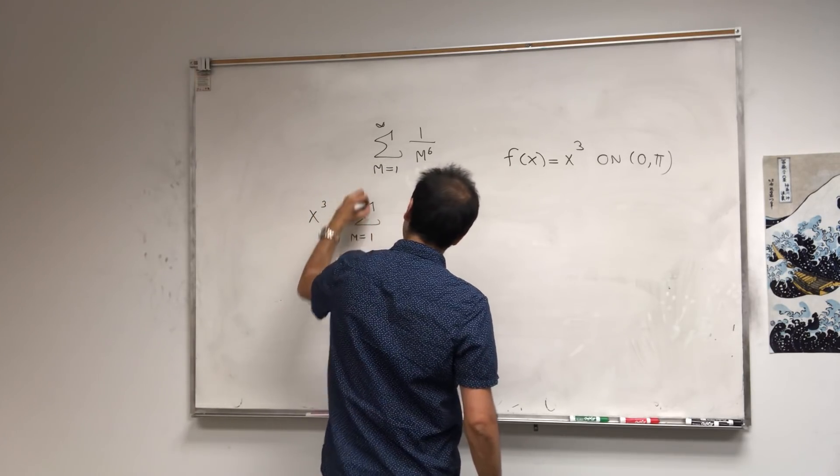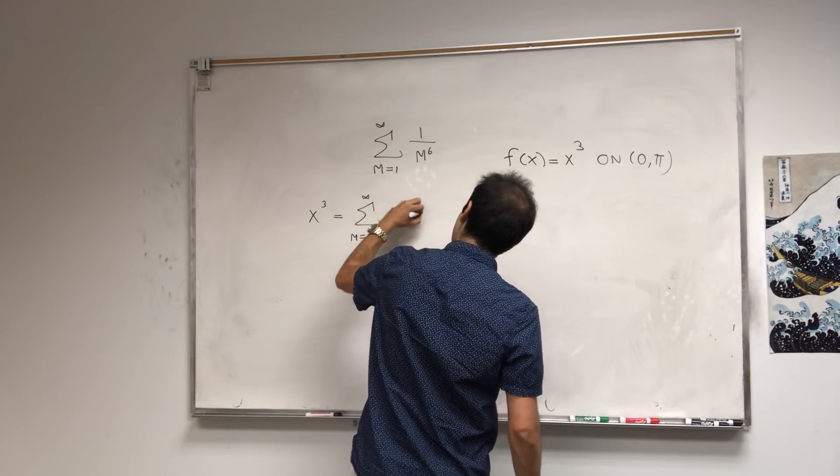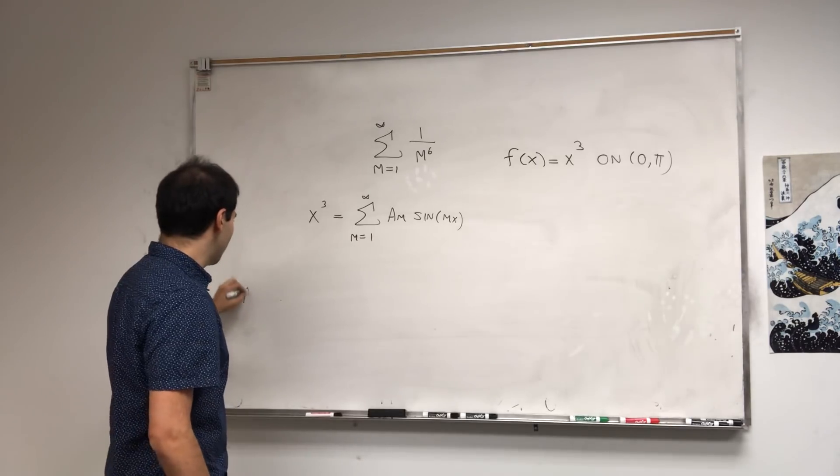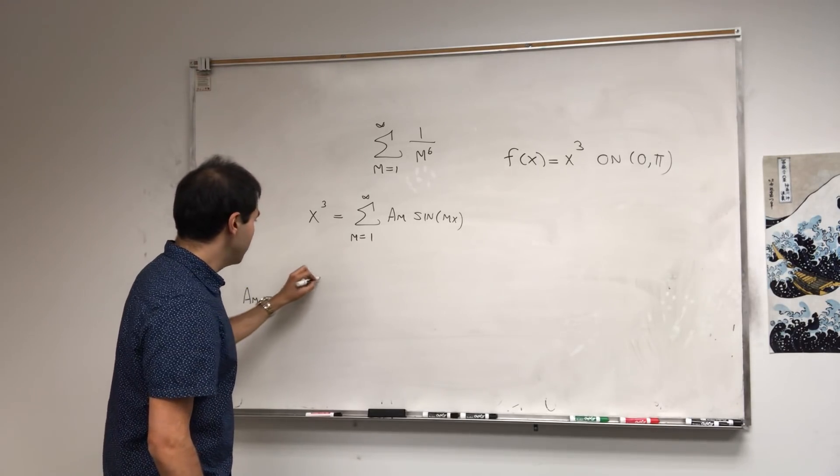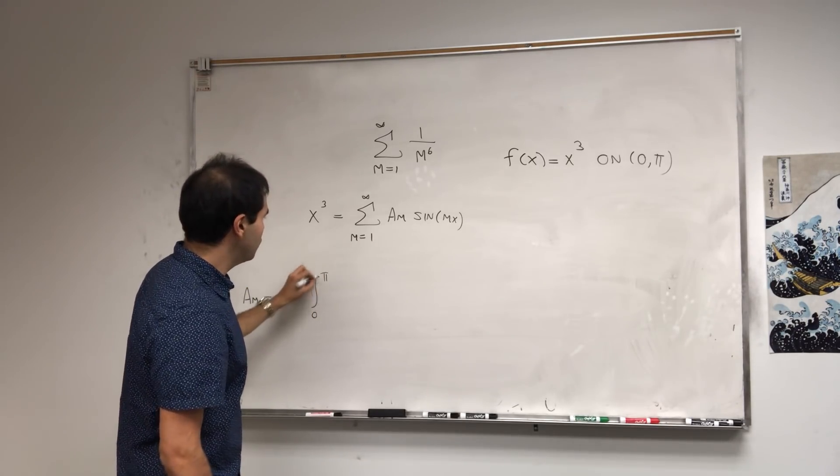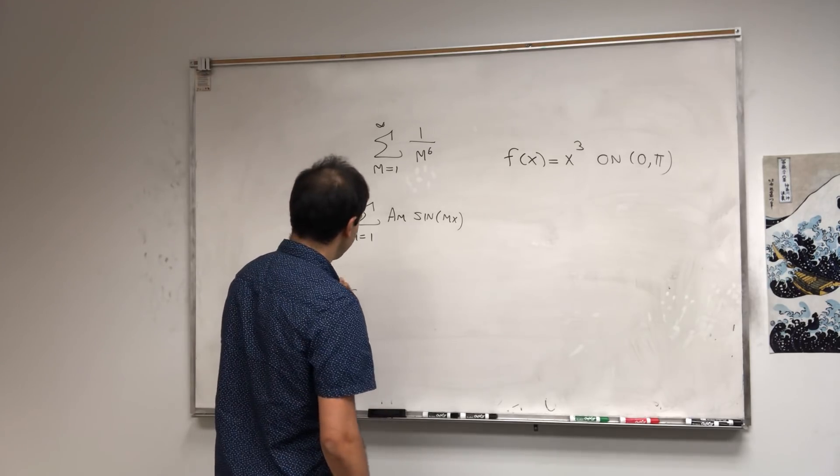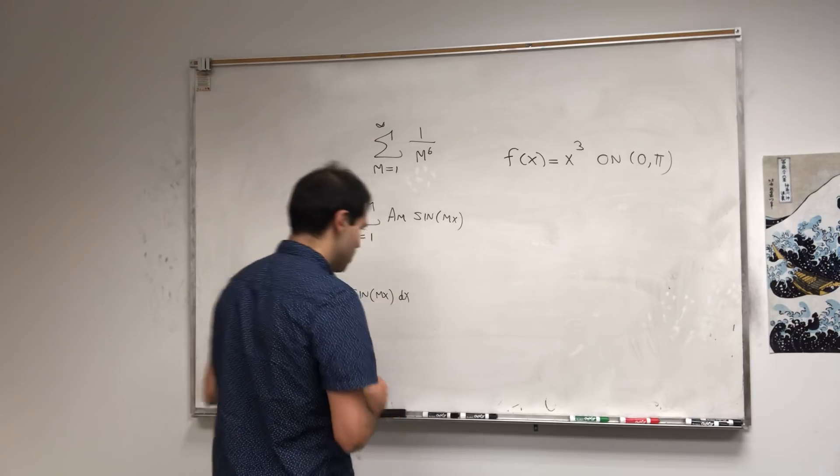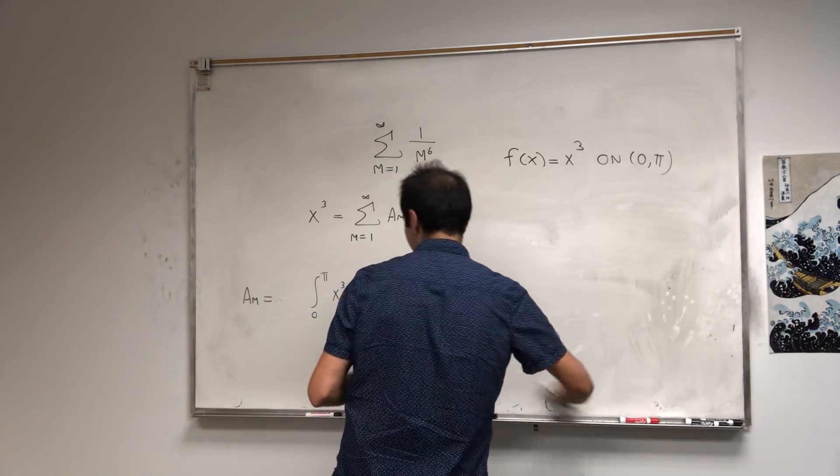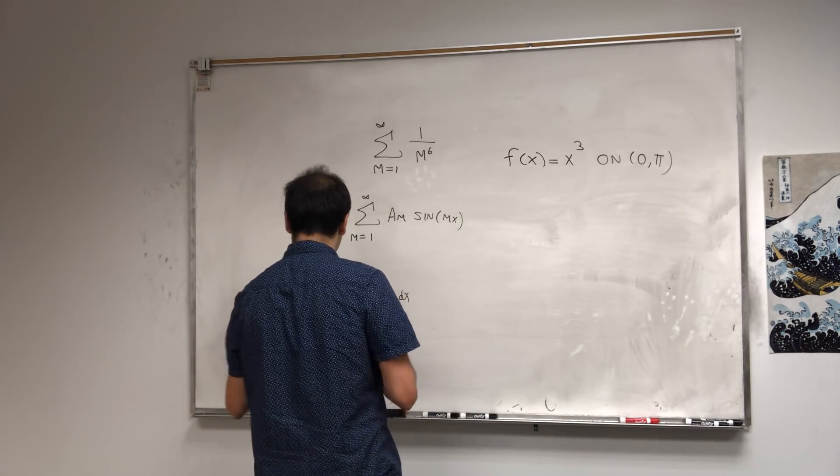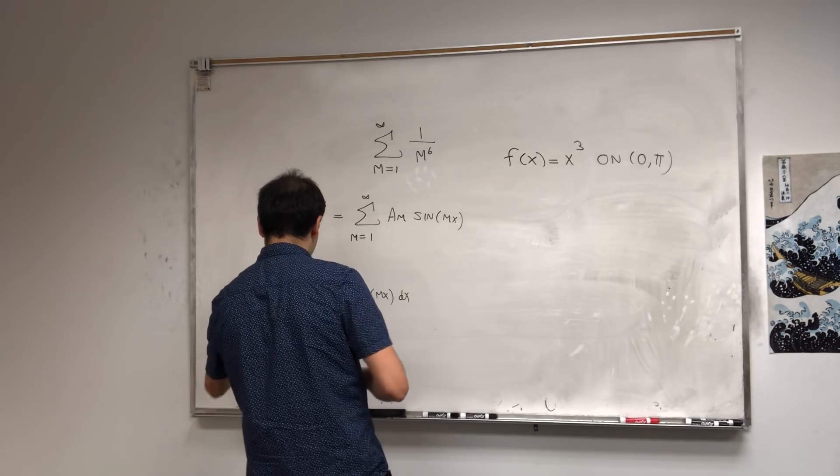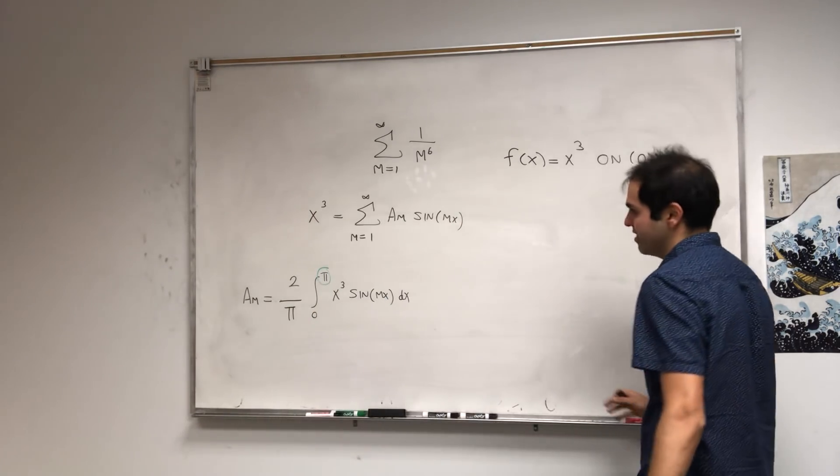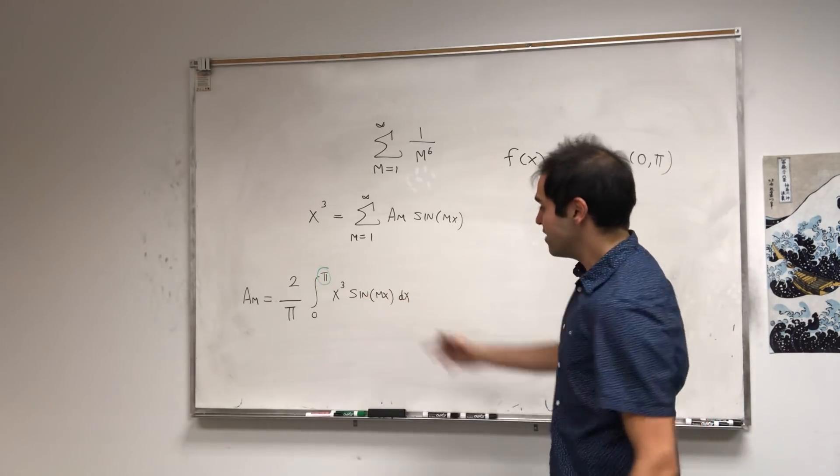And let's see, it's on the interval 0 comma pi. Then, let's expand x cubed as a sine series, sum from 1 to infinity of a_m sine(mx). The nice thing is we know the coefficients. a_m, it's the integral from 0 to pi. You have x cubed with sine(mx).